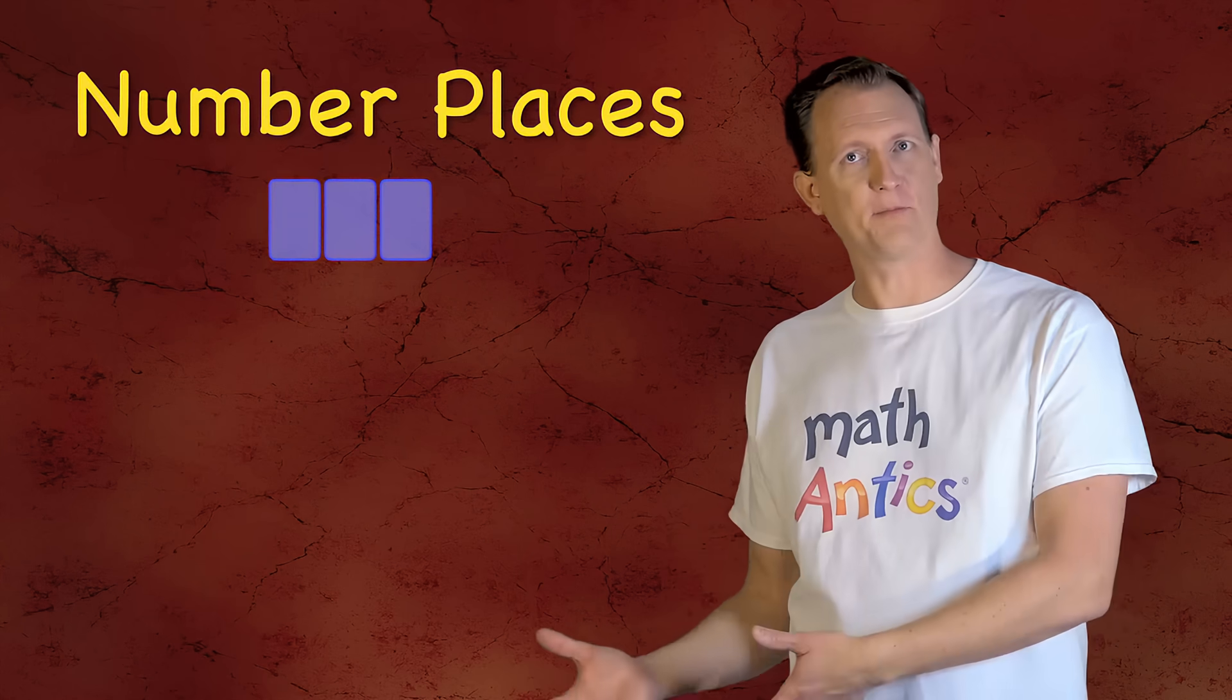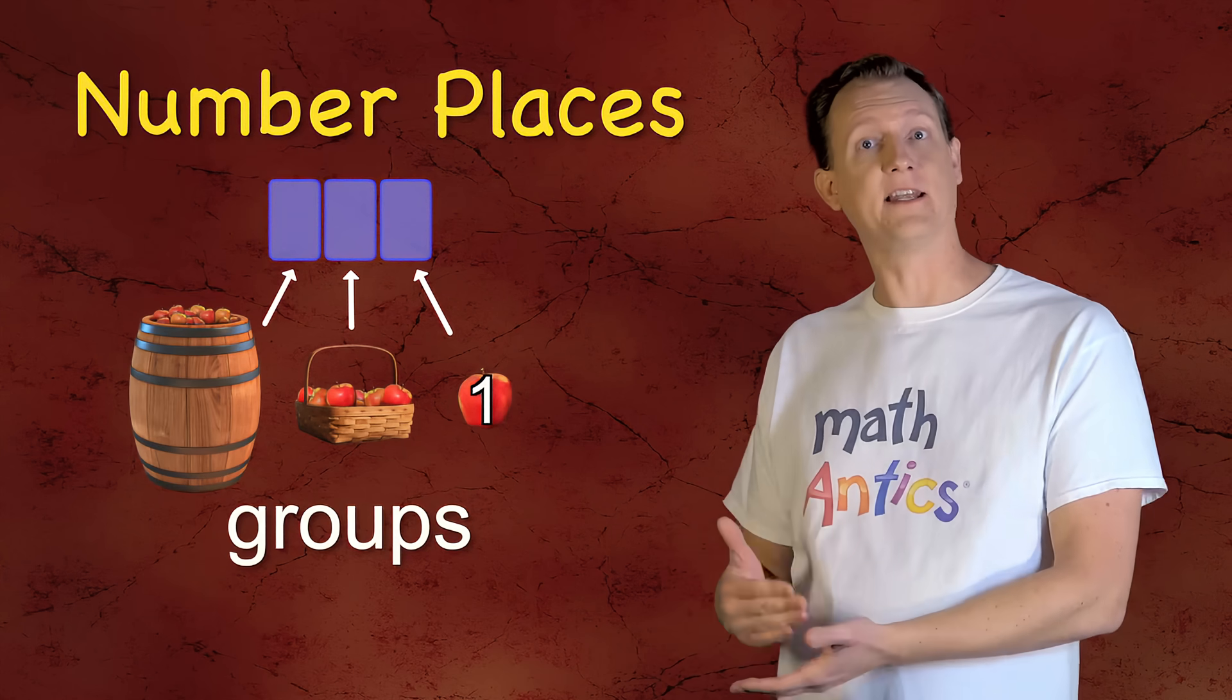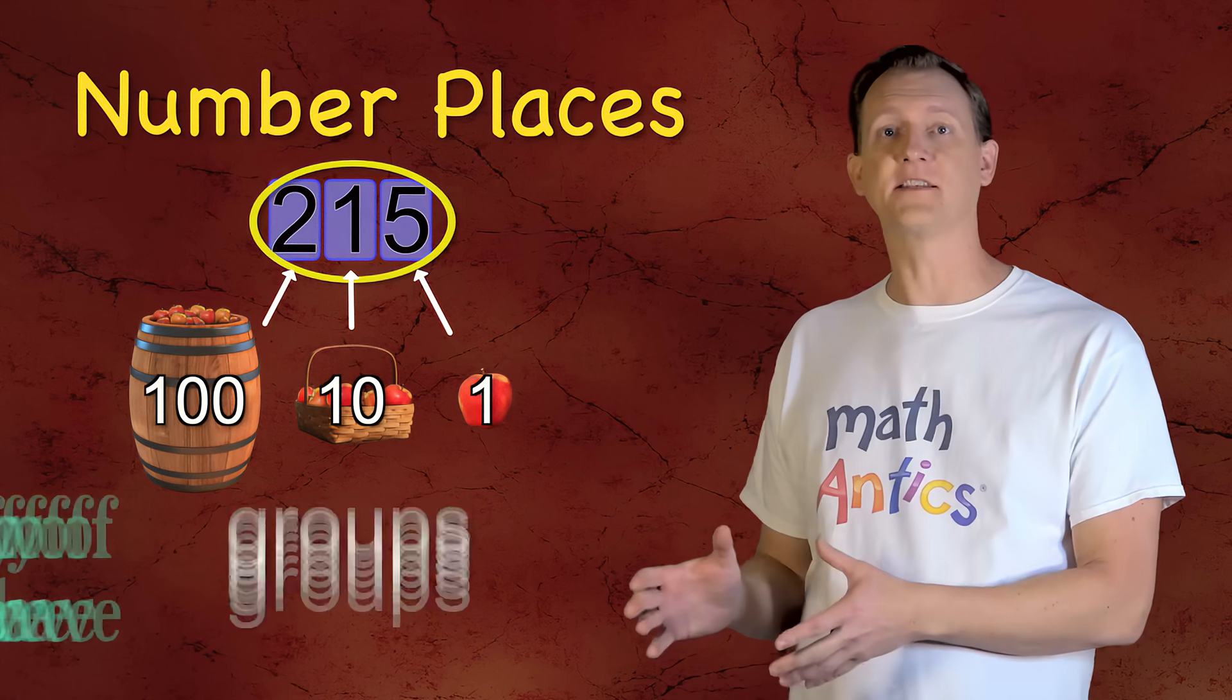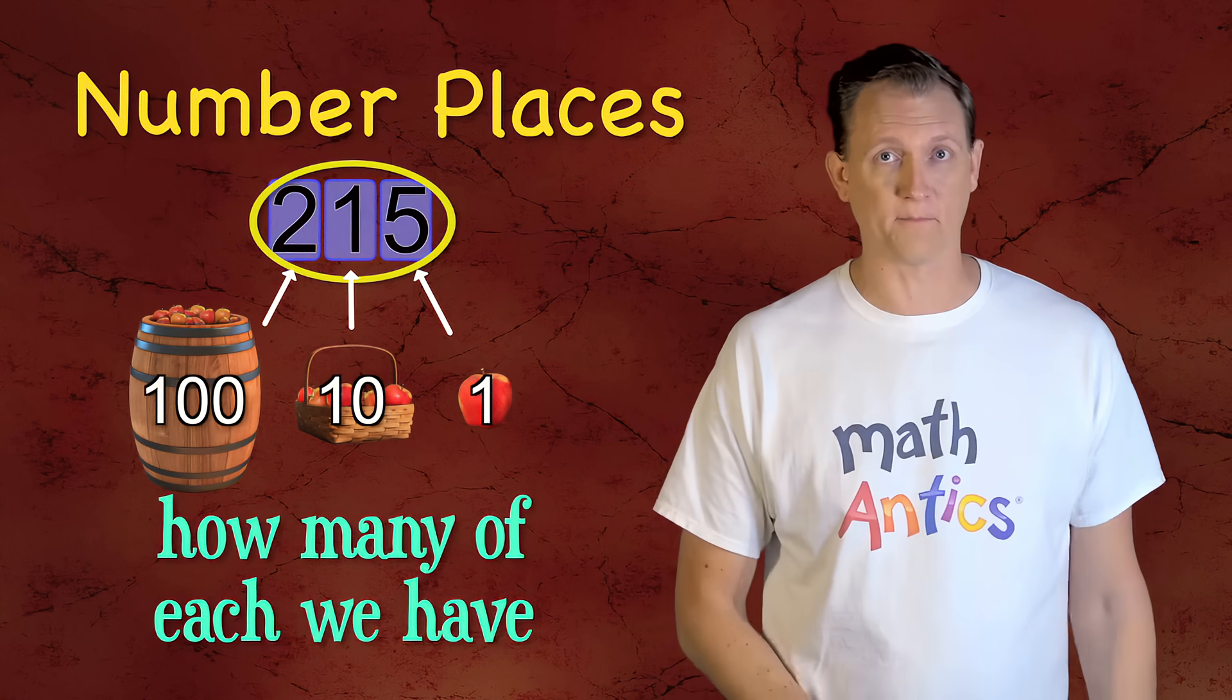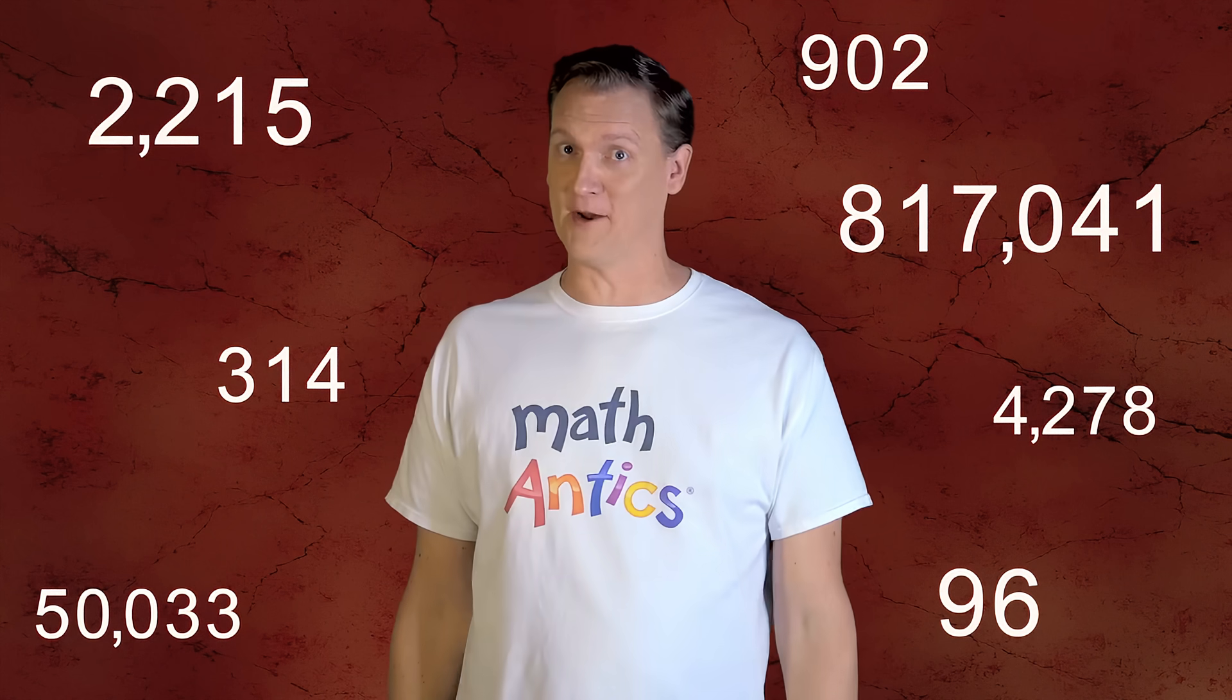Alright, so do you see how our base 10 number system works? Number places are used to count different sized groups. Each group is 10 times bigger than the next, and the digits in the number places tell us how many of each group we have. The tricky part is that the number places are invisible, so you have to know how they work behind the scenes in order to make sense of multi-digit numbers.